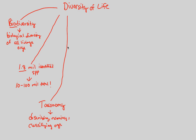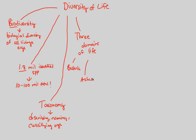We can classify the diversity of life quite broadly. As humans, we naturally want to compartmentalize and group things, because it makes things easier to study, and life is no different. We group life into three classical domains. Those domains of life are named bacteria, archaea, and eukarya. We will look at the diversity of life in much greater detail in biology later, but just know there are three classical domains: bacteria, archaea, and eukarya.